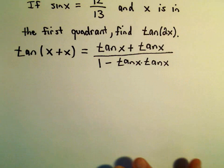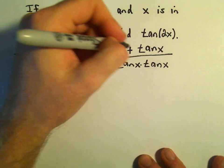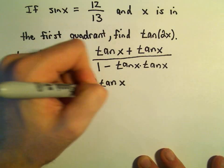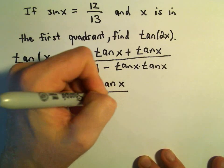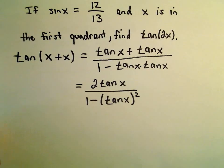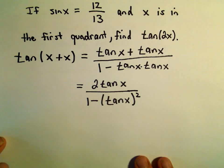And of course we can simplify this down. Tangent x plus tangent x is 2 tangent x, and then 1 minus tangent x squared. So again, there's our double angle identity.